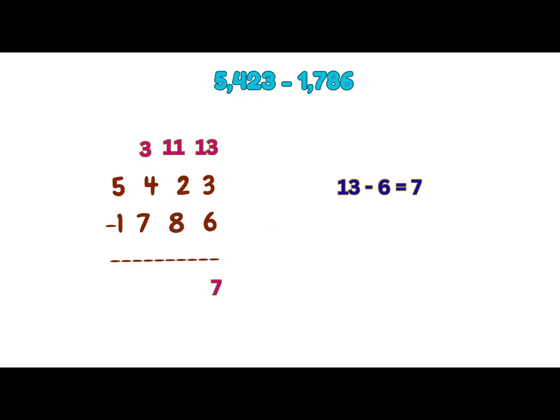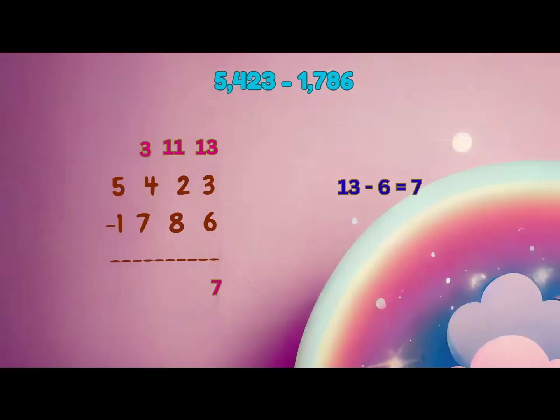Now, 11 minus 8 is equal to 3. Now, hundreds place, 3 minus 7. After borrowing, the hundreds place is 3. Since 3 is less than 7,